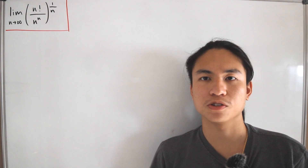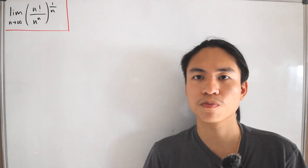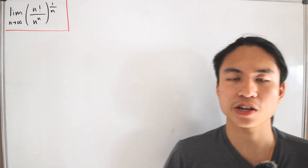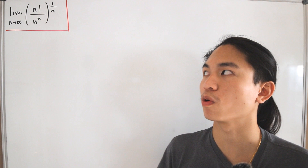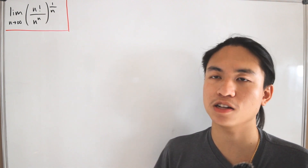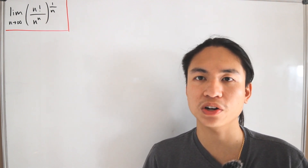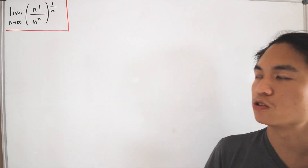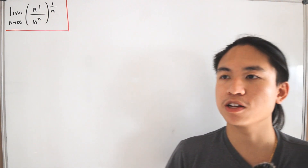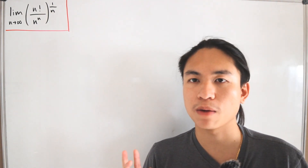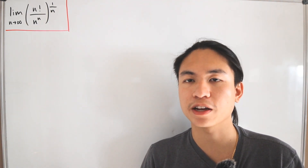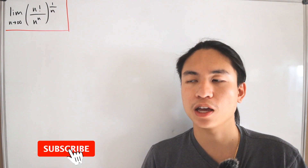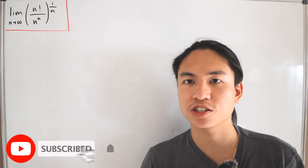Welcome back to another video. Here we have the limit as n approaches infinity of n factorial divided by n to the power n, quantity raised to the one over n power. I like to deem this factorial problem as popular — if you type this equation up in Math Stack Exchange you're going to have a bunch of different solutions on how to approach this limit.